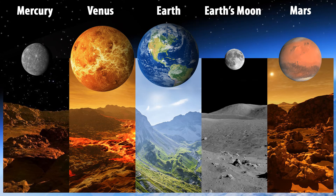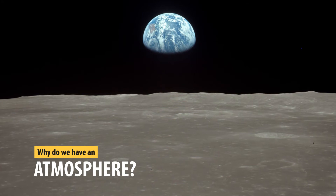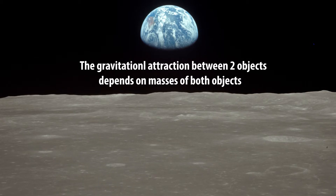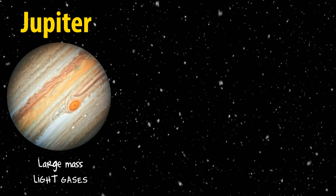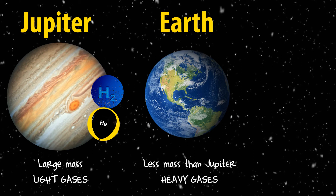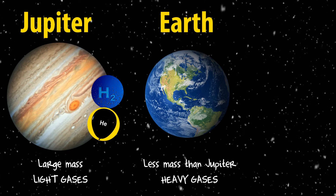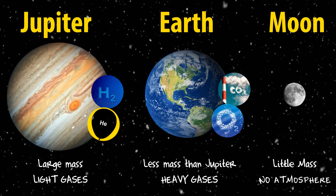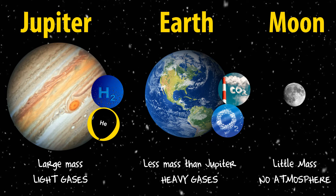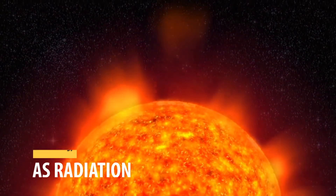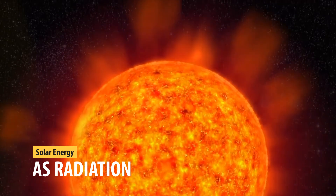Why do we have an atmosphere? The gravitational attraction between two objects depends upon the mass of both objects. Jupiter has large mass, so it can hold much lighter gases. Earth has less mass than Jupiter, therefore it has lost most of its lighter gases and kept heavier gases. The moon has too little mass to hold any gases, thus it has no atmosphere.